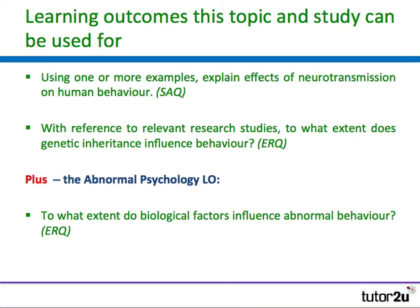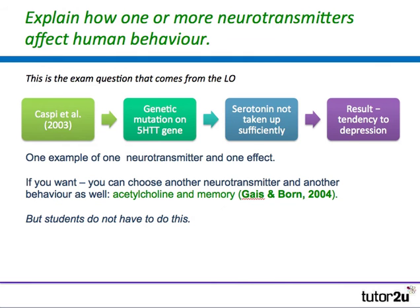We are trying to cut down the number of studies our students have to use. The exam question from the neurotransmitter learning outcome is usually: describe, outline, or explain how one or more neurotransmitters affect human behaviour. This is how you could answer it using Caspi — one example of one neurotransmitter and one effect.